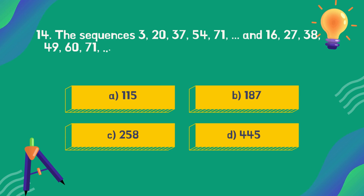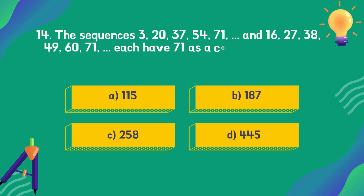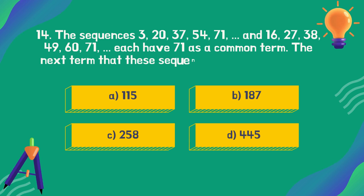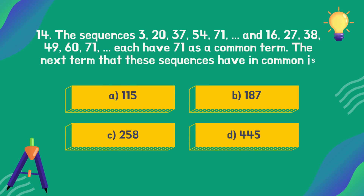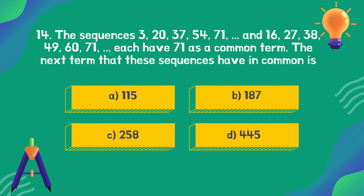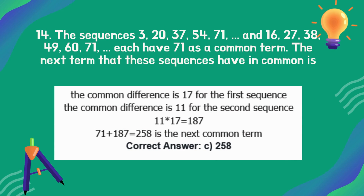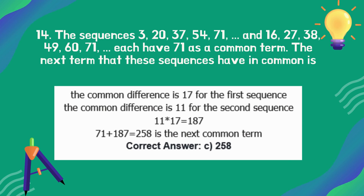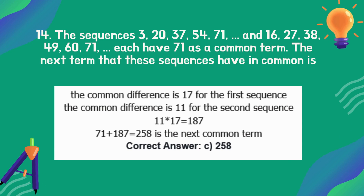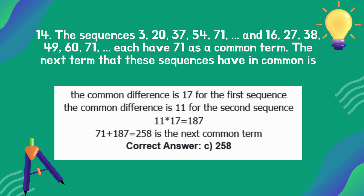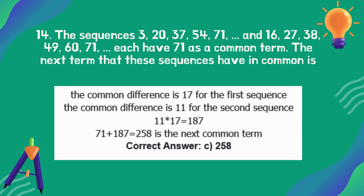The sequence 3, 20, 37, 54, 71 and the sequence 16, 27, 38, 49, 60, 71 each have 71 as a common term. What is the next term that these two sequences have in common? The correct answer is option C: 258.